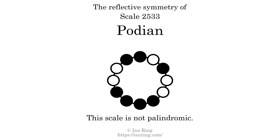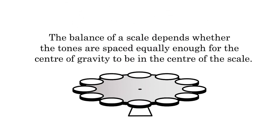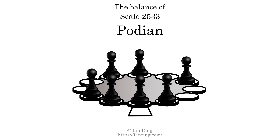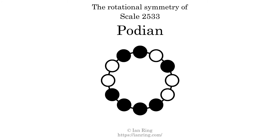This scale has no reflective symmetry. This scale has a different pattern of intervals ascending and descending, so it is not palindromic. This scale has no ridge tones. The balance of a scale depends on whether the tones are spaced equally enough for the center of gravity to be in the center of the scale. This scale is not balanced. The inverse of a scale is a mirror image — it is what you get when the sequence of intervals is reversed. The inverse of this scale is scale 1267, also known as Cotidian. This scale is chiral; it cannot transform into its inverse by rotational transformation. This scale has no rotational symmetry.